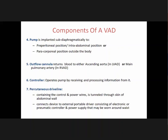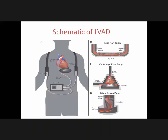The outflow cannula returns blood to the ascending aorta in an LVAD or to the main pulmonary artery in an RVAD. A controller operates the pump by receiving and processing information. A percutaneous driveline containing control and power wires is tunneled through the abdominal skin and connects the device to an external portable driver with electronic or pneumatic control and power supply worn around the waist. The controller manages all variables of the LVAD, powered by two batteries worn on either side.